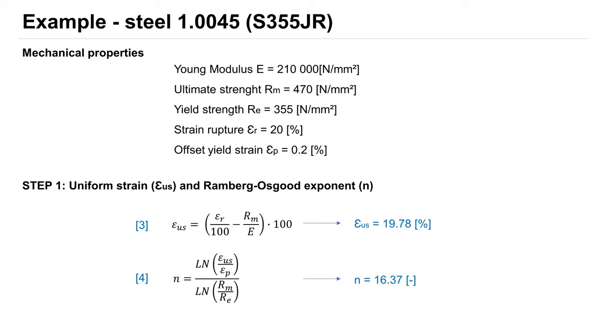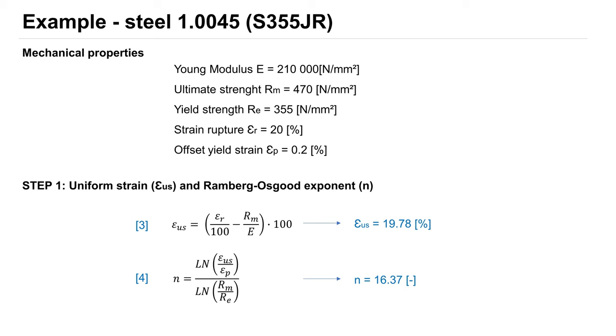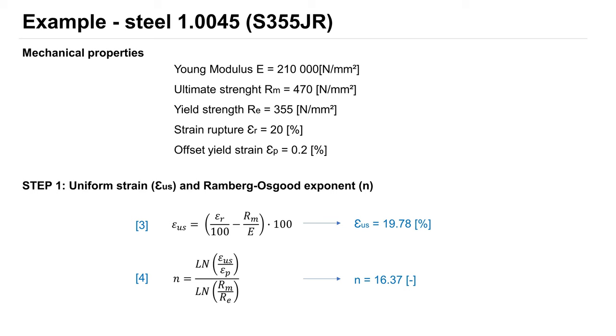Now we create a stress-strain curve for steel in four steps with mechanical properties from datasheet. Step 1: Uniform strain and exponent n calculate with Formula 3 and 4.